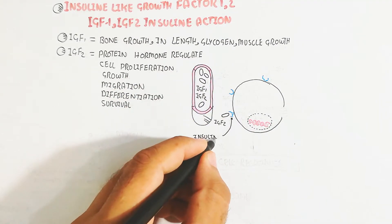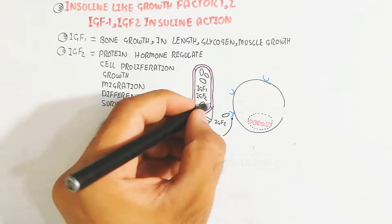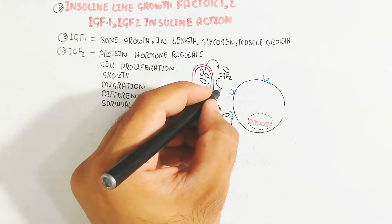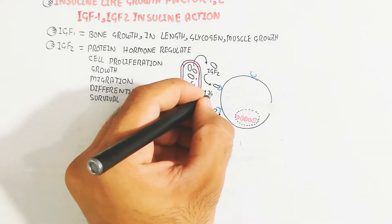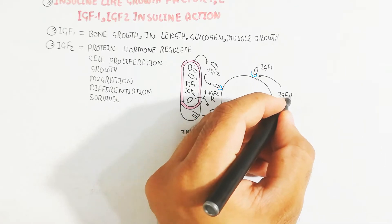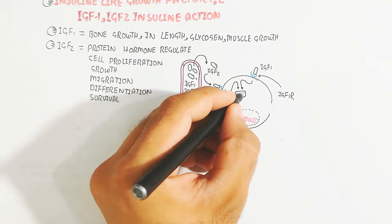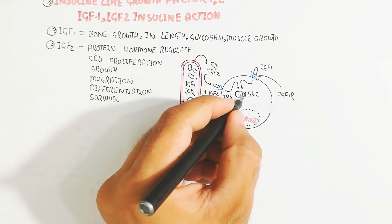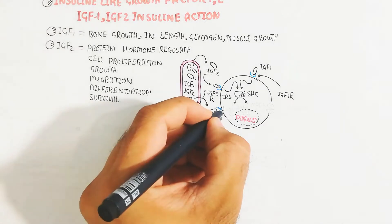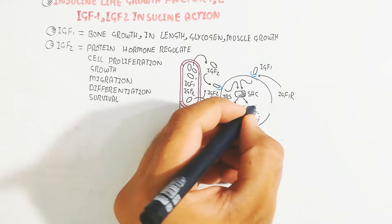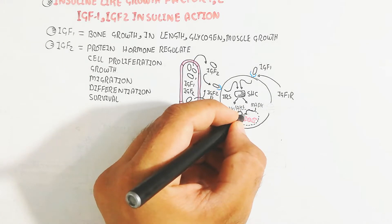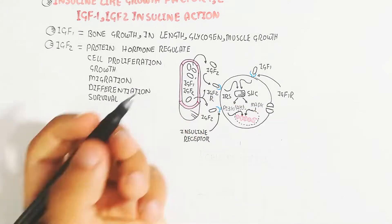The blood circulatory system contains IGF-1 and IGF-2, which bind with target tissue and target cells. They can bind with the insulin receptor instead of insulin. The IGF-2 receptor will bind with IGF-2, and IGF-2 can also bind with both the IGF-2 receptor and the IGF-1 receptor.